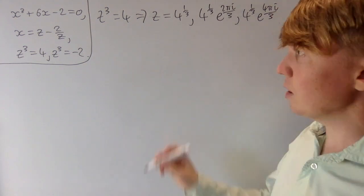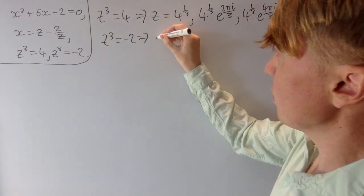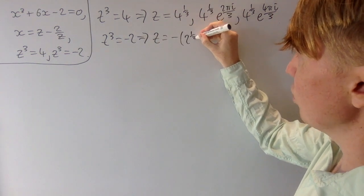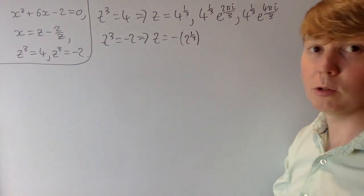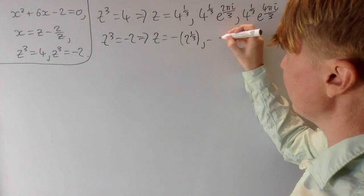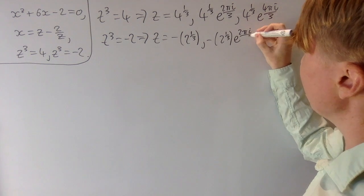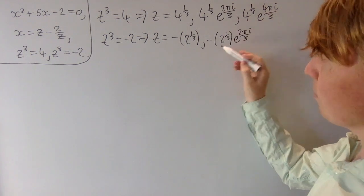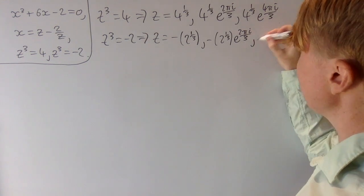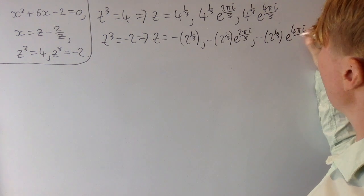When z cubed equals minus 2, our real solution is z equals negative the cube root of 2. We do the same thing multiplying by cube roots of unity: minus the cube root of 2 times e to the 2πi/3, and minus the cube root of 2 times e to the 4πi/3 are also valid solutions.